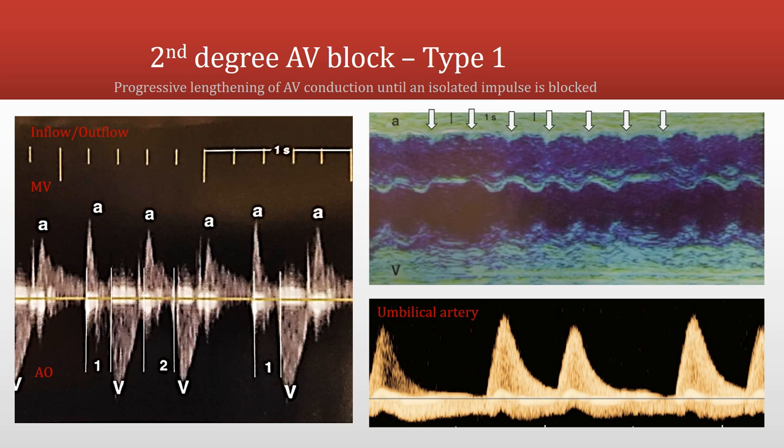In second degree AV block type 1, the AV interval gets progressively longer — the electrical signal takes increasingly longer to pass through the AV node — until it does not get through and a ventricular contraction is missing. On the inflow-outflow image, you can see the first AV interval followed by a longer second AV interval, and then a missing ventricular contraction. On the M-mode image, atrial contractions shown by white arrows at the top are occurring at a regular rate, but ventricular contractions are periodically absent.